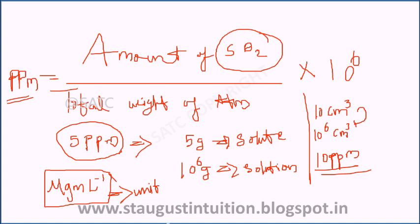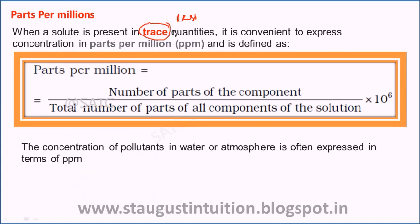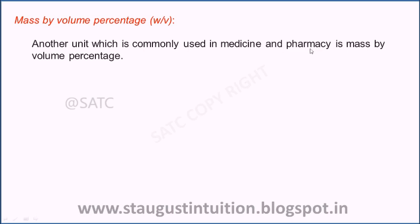So, ppm is used when the solute amount is very, very small — trace amount — and it is commonly used for pollutants in the atmosphere. Another percentage measure is usually used in labs and pharmacy: mass-volume percentage.